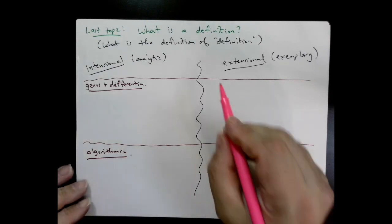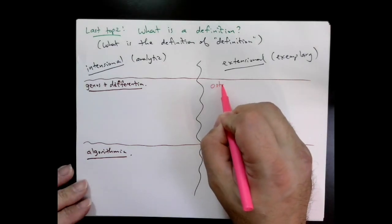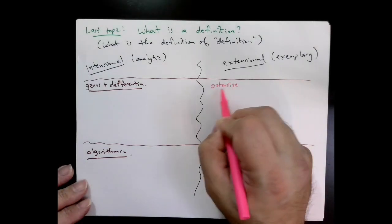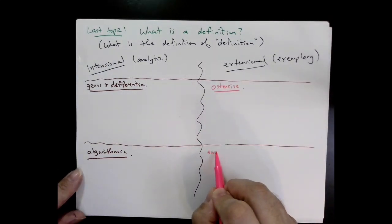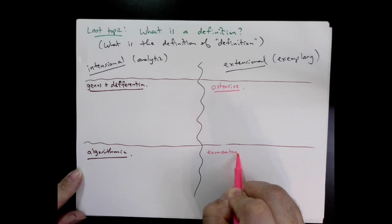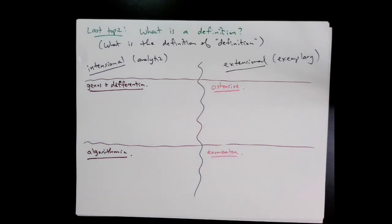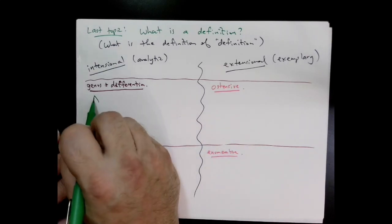In the extensional world, there's typically things called ostensive and enumerative. An ostensive definition is where I basically give you a collection of examples and put the onus on you to figure out what I'm thinking of as a pattern. Enumerative is I just list everything, and the list is itself the definition.